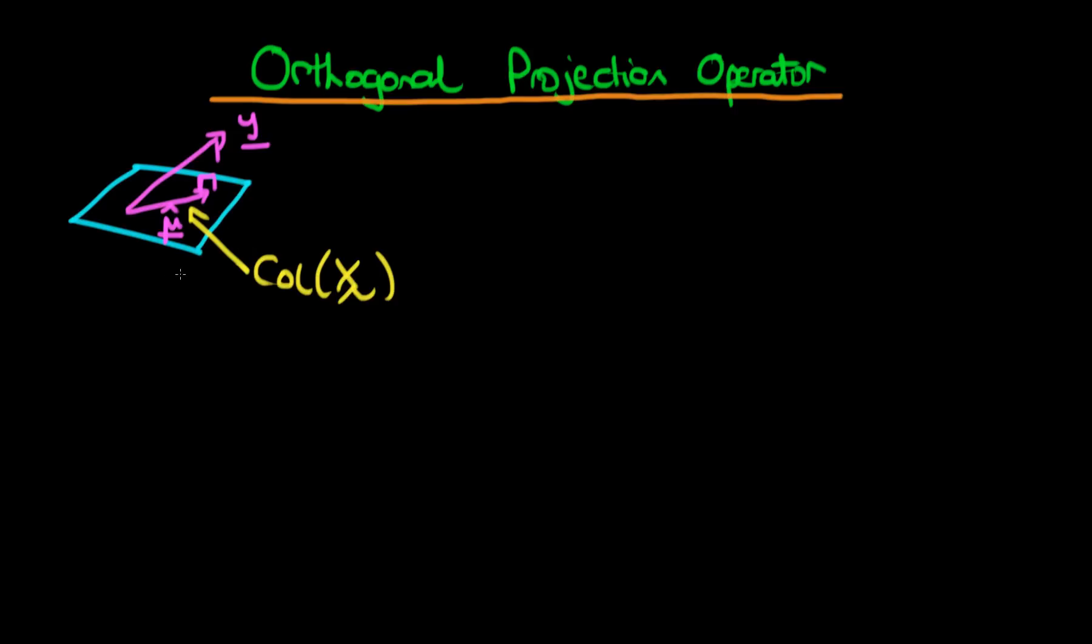In this video we're actually going to define what we mean by the orthogonal projection operator, and how do we actually go from y to mu hat. Well we can already answer this. We know that mu hat is just given by X times beta hat. And since we know that beta hat is X prime X all to the power minus 1 times X prime y...